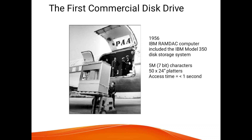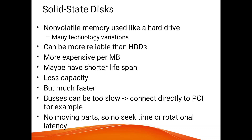The first commercial disk drive was invented in 1956 — it was the IBM 350 disk storage system. Next is the solid state disk (SSD), which is also a secondary storage device that can hold large amounts of data. It is non-volatile memory used like a hard drive. SSDs are more reliable than HDDs but more expensive per MB, may have a shorter lifespan, have less capacity, but are much faster. The bus can be too slow, so SSDs are sometimes connected directly to the PCI bus. SSDs have no moving parts, no seek time, and no rotational latency.